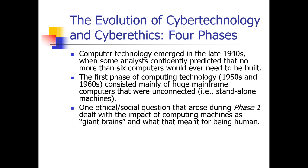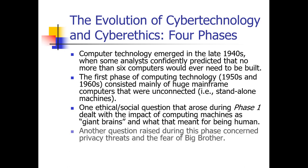One ethical social question that arose during this early phase was: what impact would computing machines — basically these giant brains — have on humans? Another question raised during the same phase was about privacy threats and the fear of big brother, meaning government oversight.